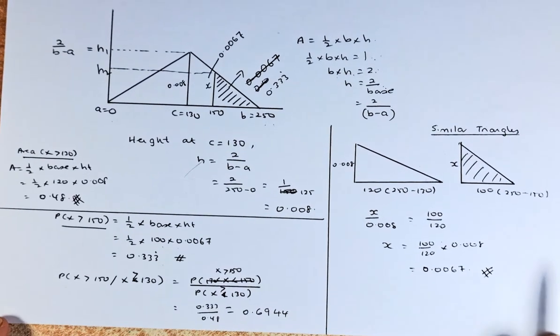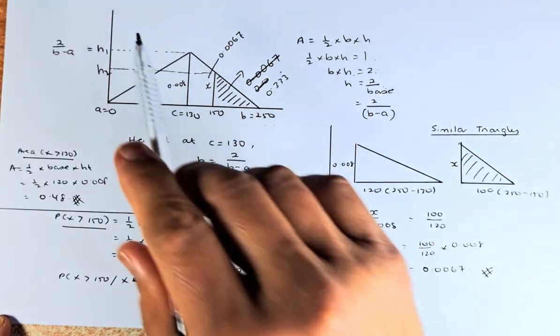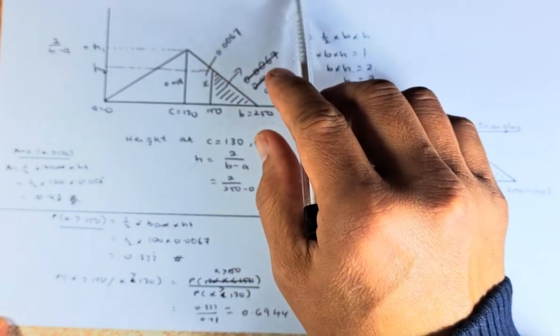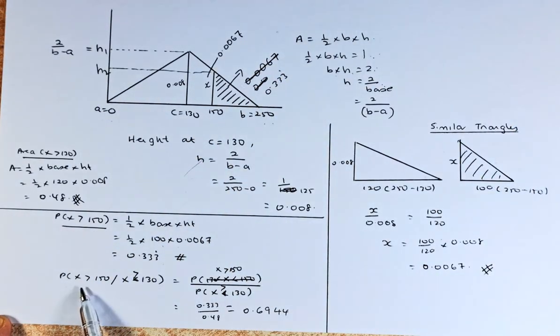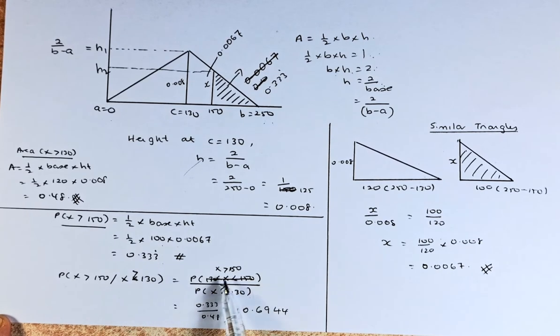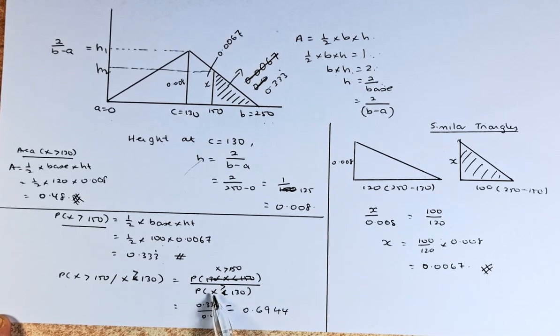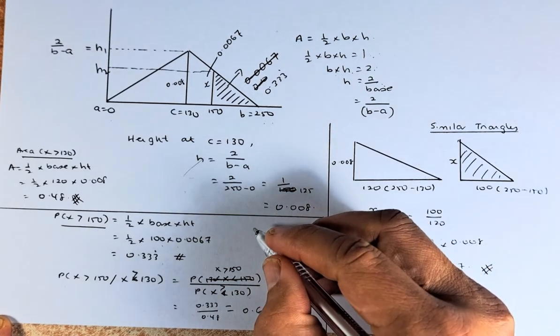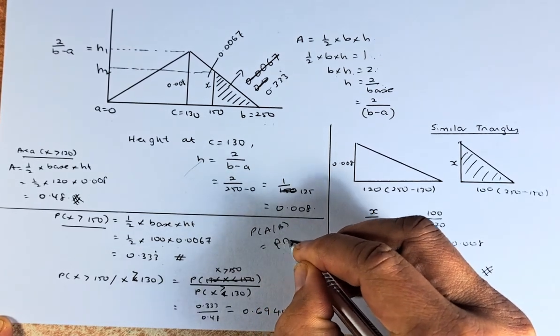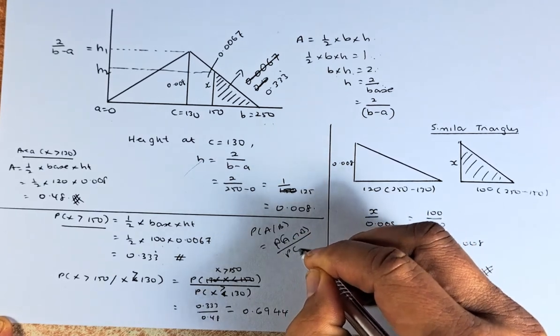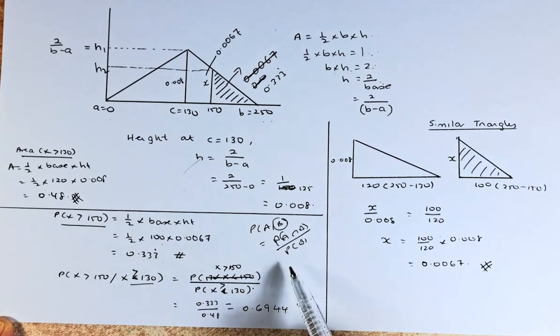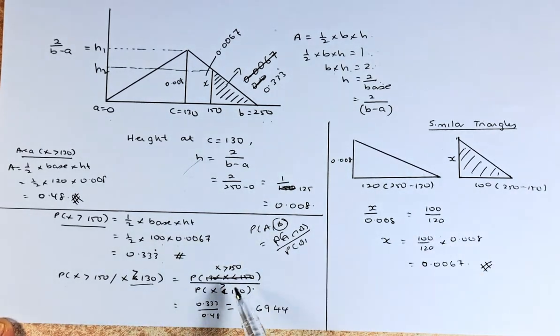Now we need to do some calculation. The question asks you, what is the probability that it spends more than 150 in one transaction given the condition that they spend more than 130? So x greater than 150 given that x greater than 130. In the top part, we're going to have x greater than 150. The bottom part is going to be x greater than 130. Because the formula for probability of A given B is probability of A and B over probability of B.